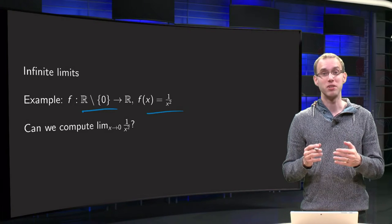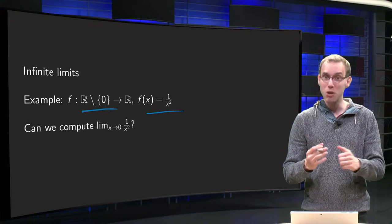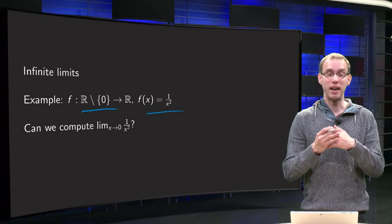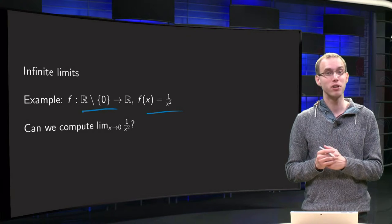We can do this, because in the limit we are not actually at equal zero, but we are getting close to x equals zero, and f of x is everywhere defined except at zero, and that is actually the point where we are not coming.